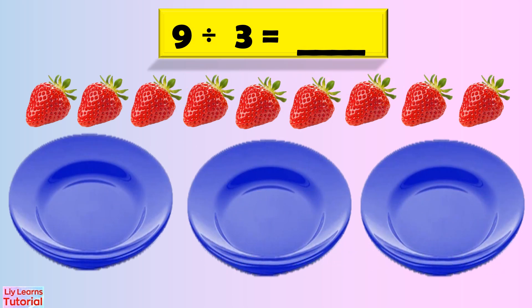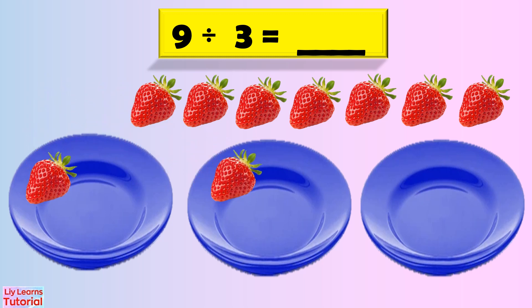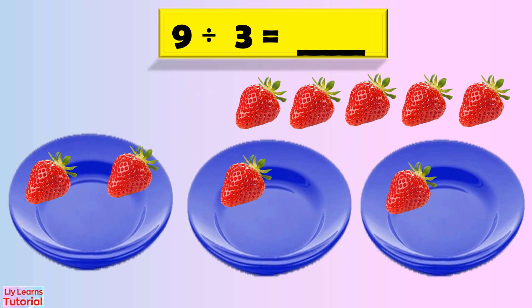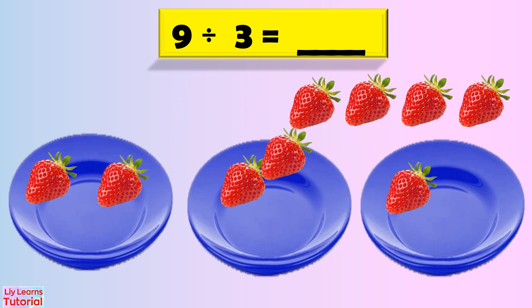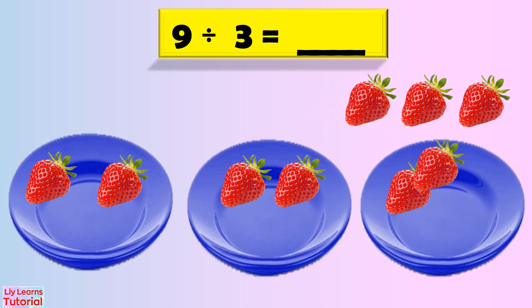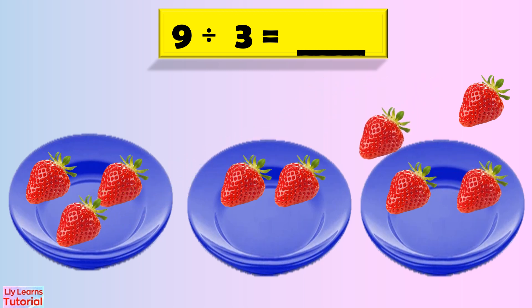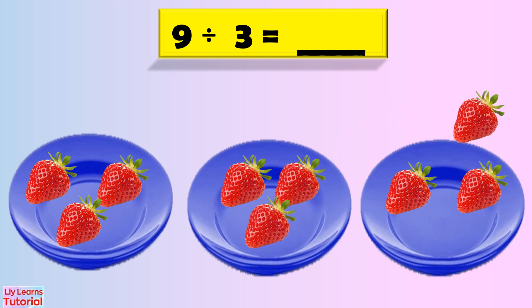Let's work on another example. Nine divided by three. Let's share them to make equal sets of three. I'm going to go one, two, three, four, five, six, seven, eight, nine.